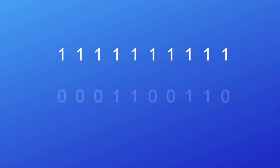It may seem odd that information is connected to randomness, but in fact the two are closely related. Imagine a string of digits made only of ones and zeros. The string consisting of just ten ones is completely orderly and, because of this, contains practically no information. On the other hand, the string 0001100110, which was generated randomly, has the maximum amount of information possible for its length.